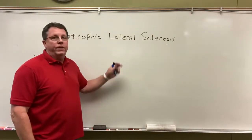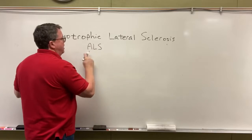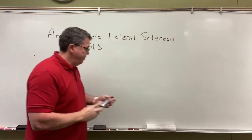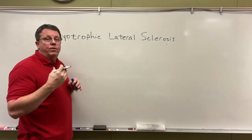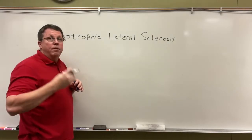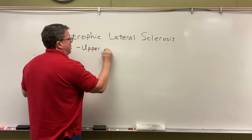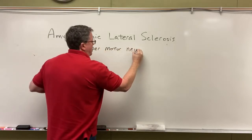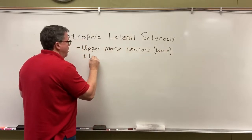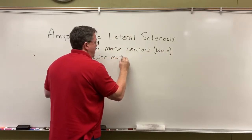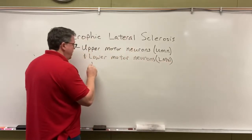Today we're going to talk about amyotrophic lateral sclerosis, more commonly known as Lou Gehrig's disease or ALS. Basically, this is a condition in which the upper motor neurons in the brain and the lower motor neurons in the spinal cord start to degenerate and die. We're going to call these UMN and LMN.